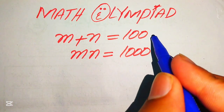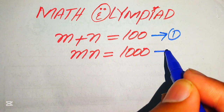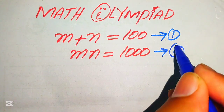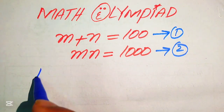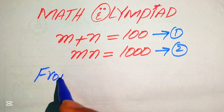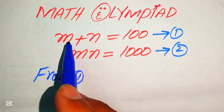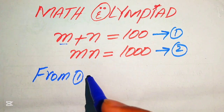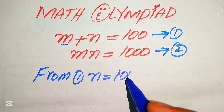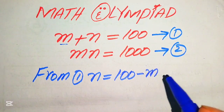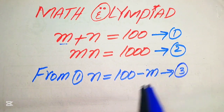We call the first equation number 1 and the second equation number 2. From equation number 1, we move the m to the right hand side and we get n equals 100 minus m, and we call this equation number 3.